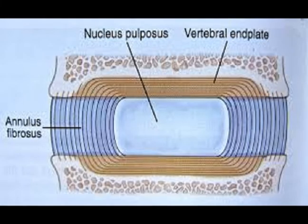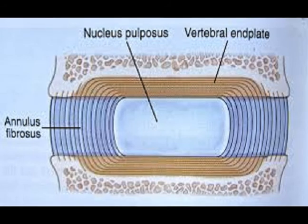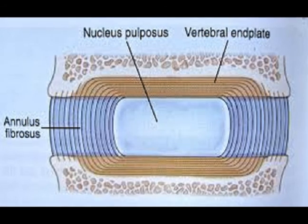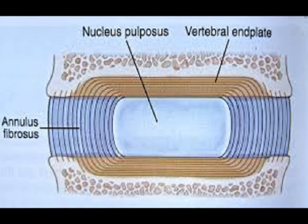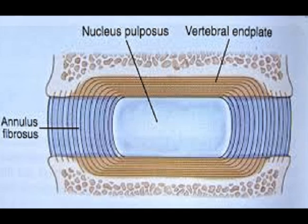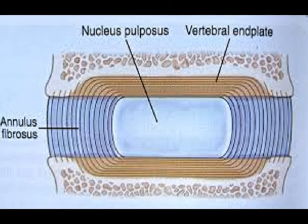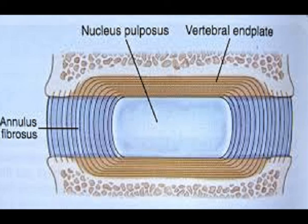The vertebral end plates contact the superior and inferior vertebral bodies. The end plates are not distinctly part of the disc; they are better viewed as part of the vertebral body. The end plate covers the entire nucleus pulposus but only the inner aspect of the annulus fibrosus. They are strongly attached to the disc but weakly attached to the vertebral body.